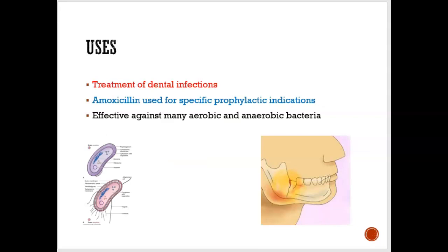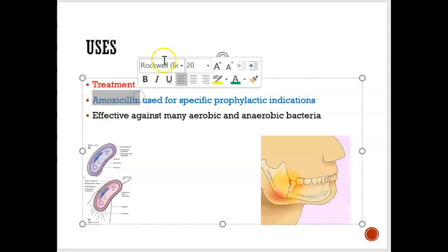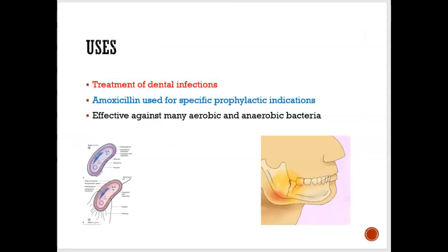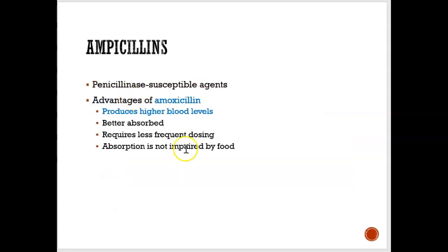When would penicillin be prescribed? If you have a dental abscess or infection, it may be prescribed — and amoxicillin is usually the choice that dentists use. It's the antibiotic dentists most commonly provide to clients. Penicillin is good for both aerobic and anaerobic bacteria, meaning it works on gram-positive and gram-negative bacteria. So amoxicillin should be able to kill both gram-positive and gram-negative bacteria.